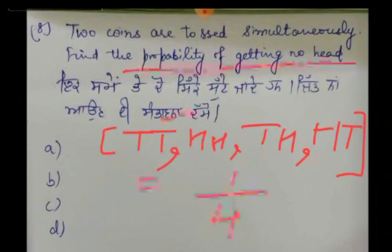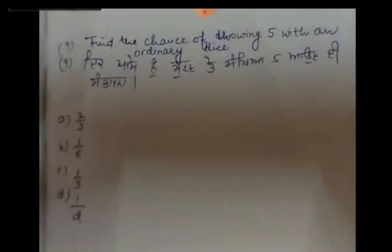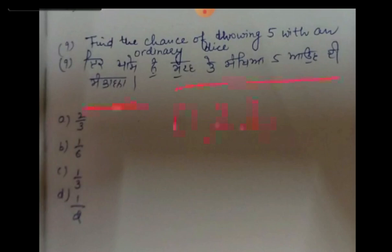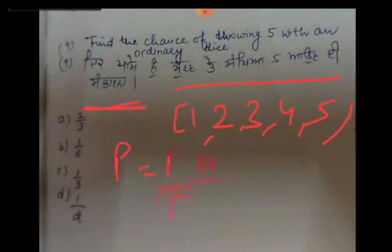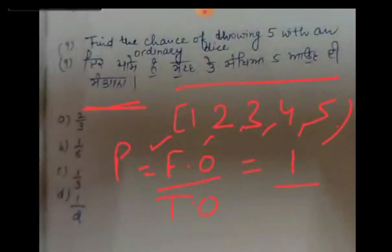Come to the last sum. Find the chance of throwing a 5 with an ordinary dice. The formula of probability is favorable outcomes over total outcomes. Favorable outcomes: there is only one number 5 on a dice. Total outcomes are 6. So our answer is 1 by 6.